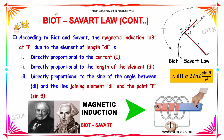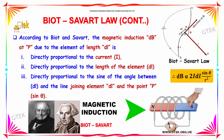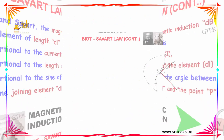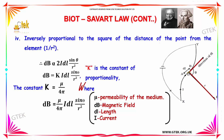According to Biot-Savart law, the magnetic induction dB at P due to the length dL is directly proportional to the current I, directly proportional to the length of the element dL, directly proportional to the sine of the angle between dL and the line joining dL to the point P, and inversely proportional to the square of the distance R from point O to P. This gives: dB ∝ I dL sinθ / R².